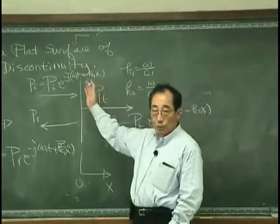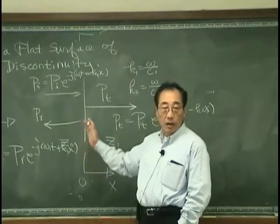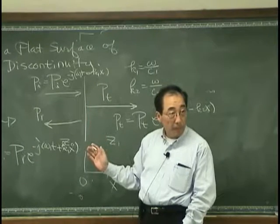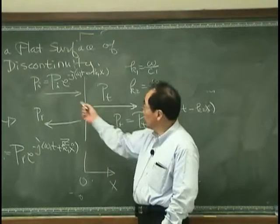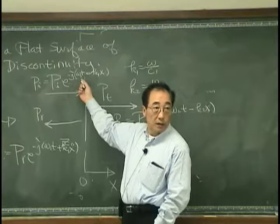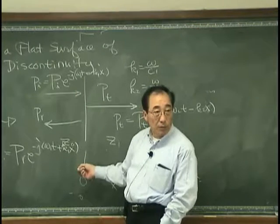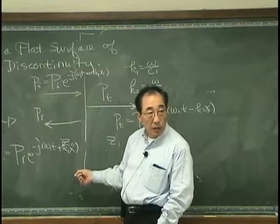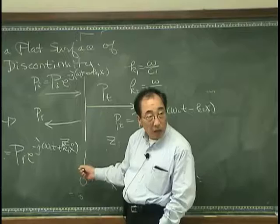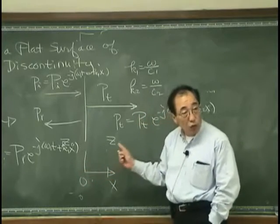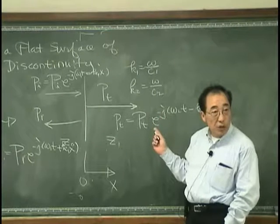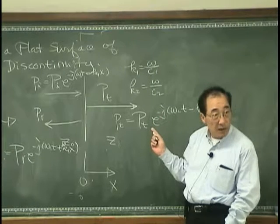Then the pressure and the velocity at x equals 0 has to be the same. The pressure due to PI would be PI exponential j omega 1 t, and the pressure due to reflected wave would be PR exponential j omega 1 t. That has to be equal to PT exponential j omega 2 t.